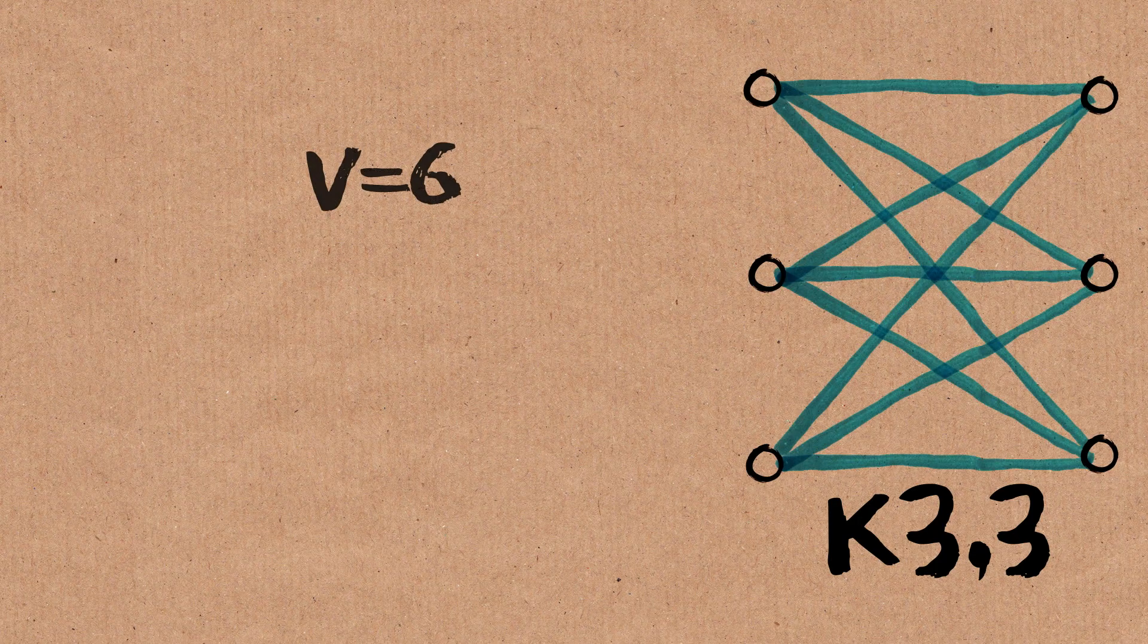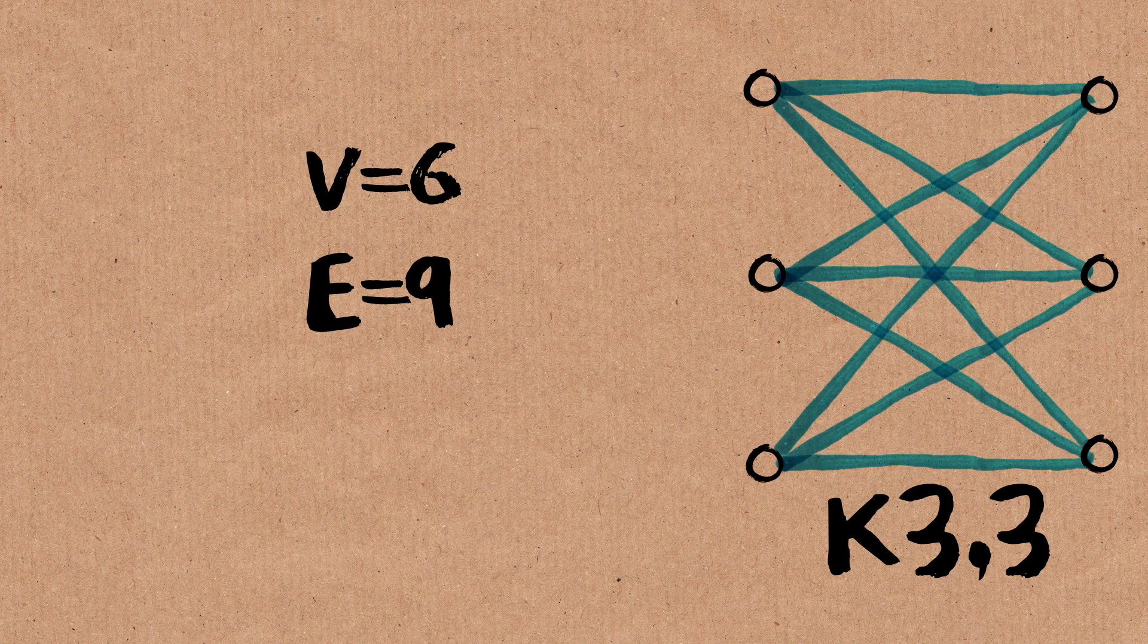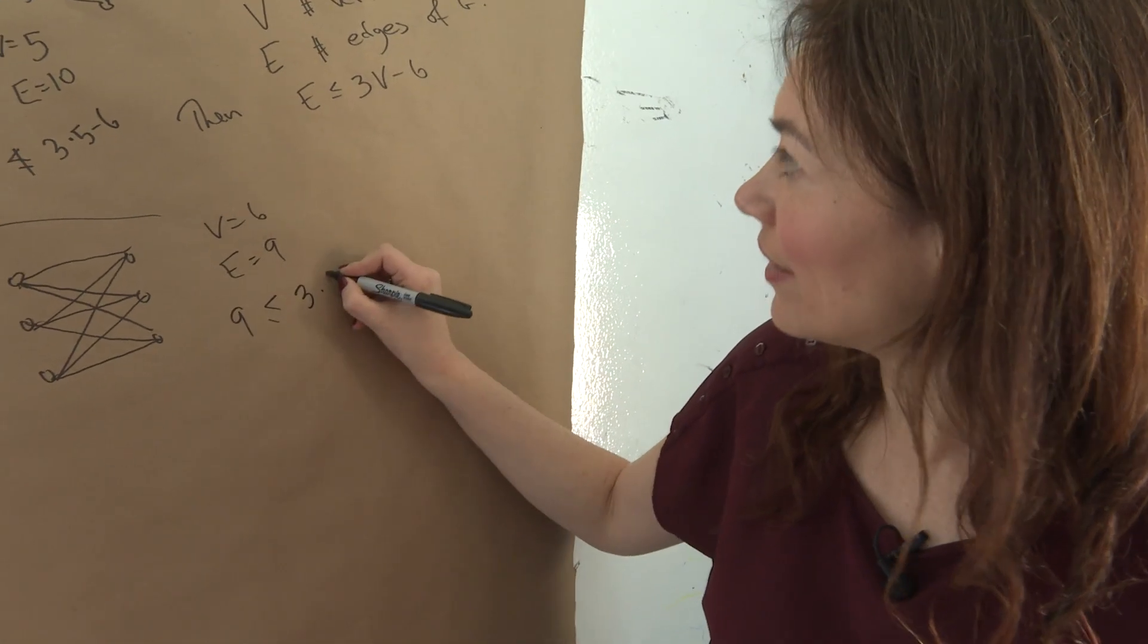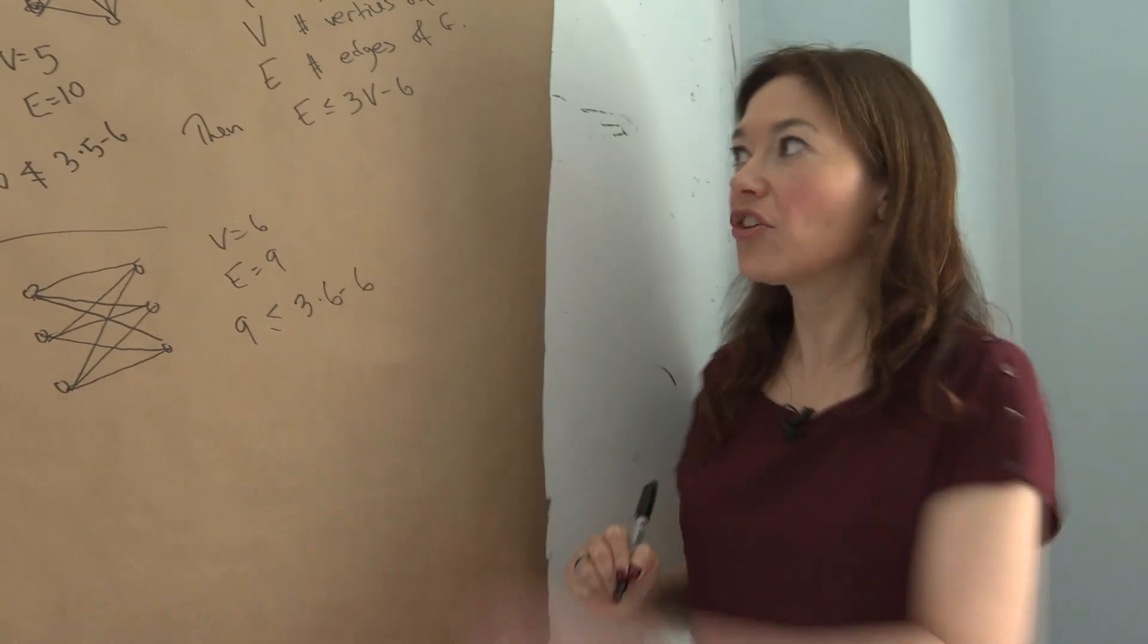So let's count, the number of vertices is 6, the number of edges is 9, and then if you do that, it does come out, sadly. 9 is at most 3 times 6 minus 6. So that's not going to work. This is not an if-and-only-if. This is just a tool.